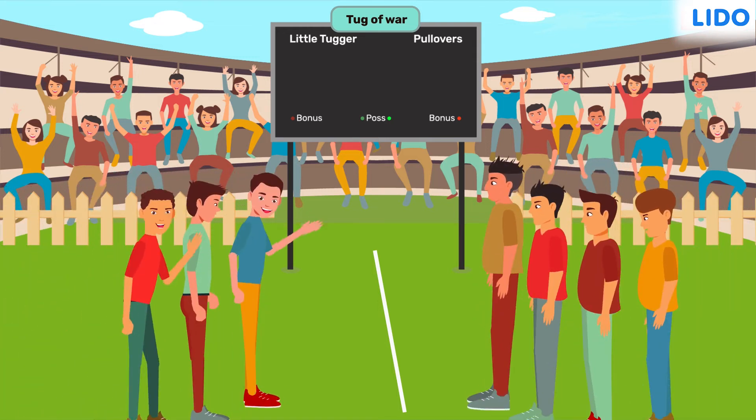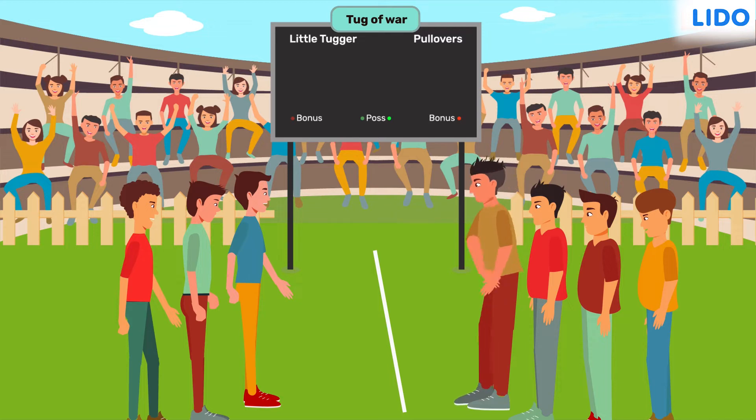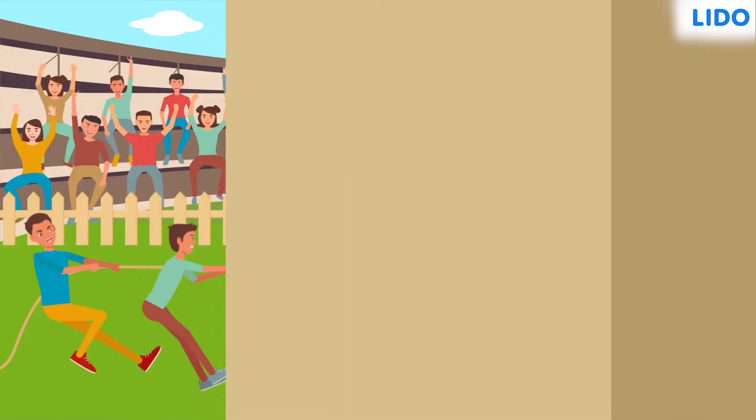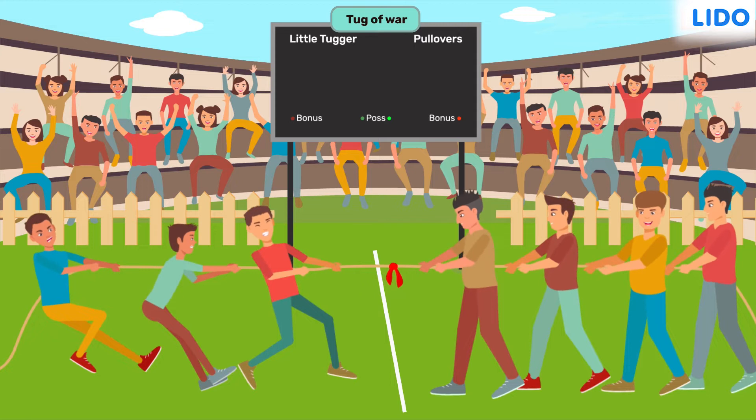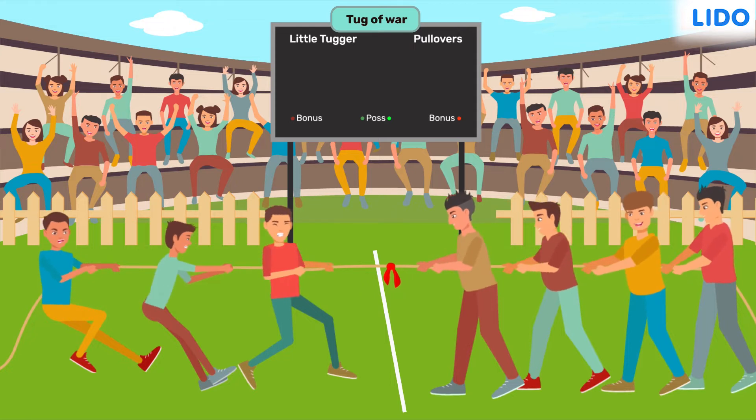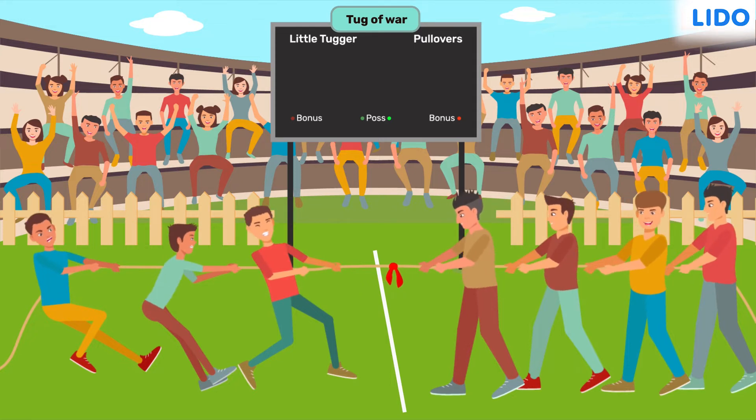But you know, Little Tugger is actually the weakest with only three members and they have to compete with the strongest team of the tournament, the Pullovers. So it's a match between weak versus strong. It's obvious that Little Tuggers never stood a chance against Pullovers. Just look how strongly the Pullovers pulled on the rope.